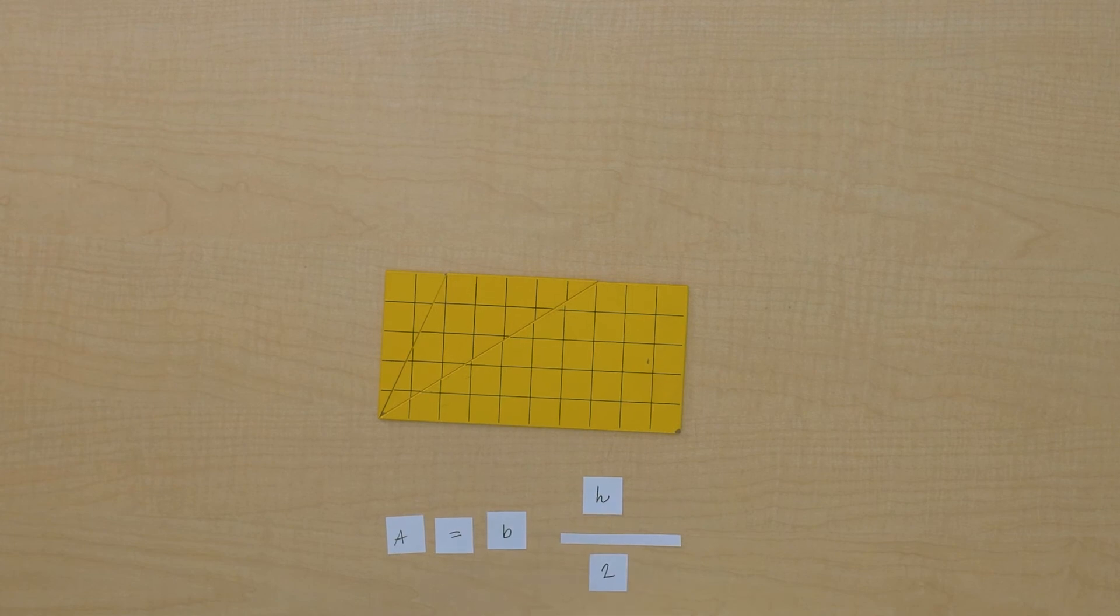So to find the area of our triangle, we can multiply the value of its base times the value of its height divided by two. Maybe you should find the area of more obtuse angled triangles.